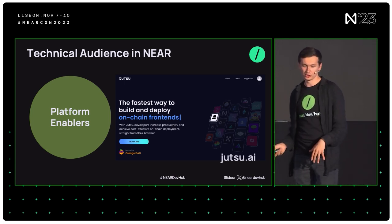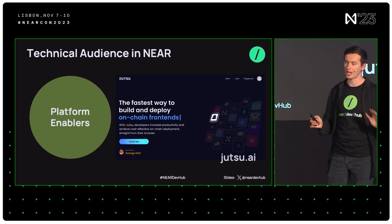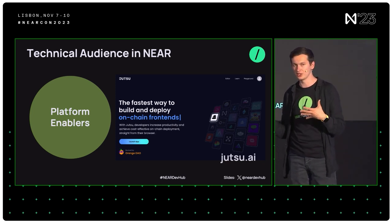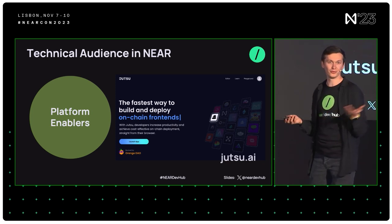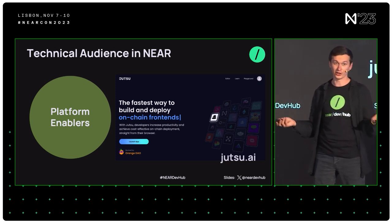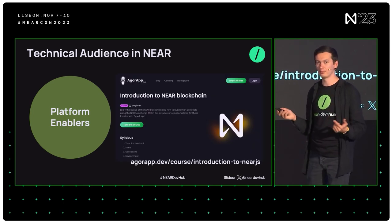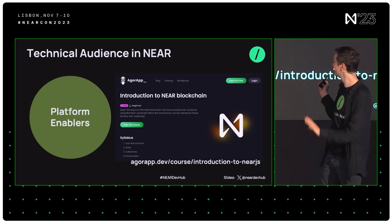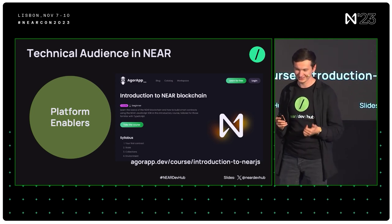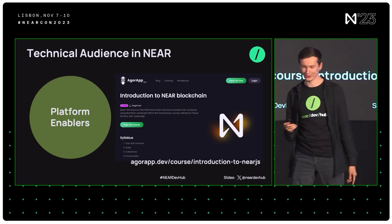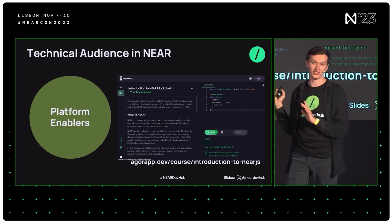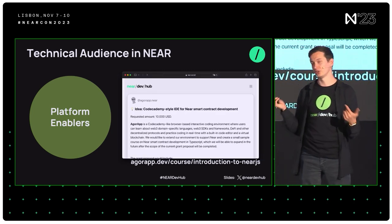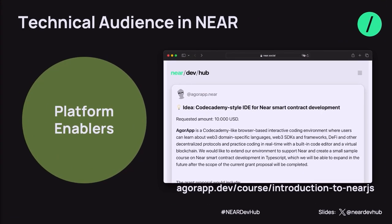Just examples of those platforms that I want to highlight — what I see happening, to productionalize the platform enablers role a little bit: Jutsu AI, I'm sure you've heard about them during this NearCon already. There is AgarApp — you might not have heard about them just yet because I received this information just yesterday, so we are shipping as we go. They created this cool course on Near SDK.js and how to use it, which is awesome. And it all started on DevHub, which is where I'll connect it in just a bit.